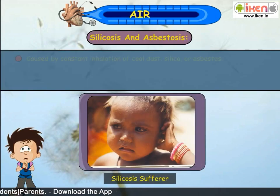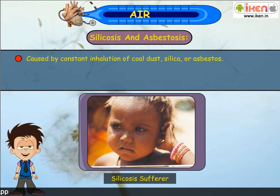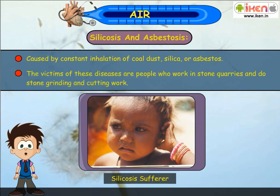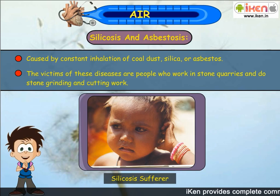Silicosis and asbestosis are caused by constant inhalation of coal dust, silica or asbestos. The victims of these diseases are people who work in stone quarries and do stone-grinding and cutting work.